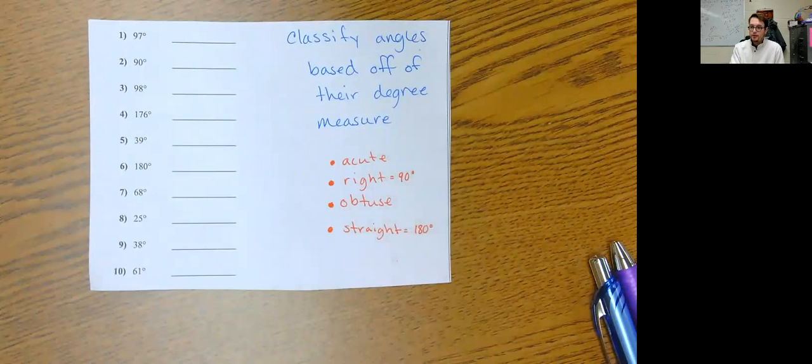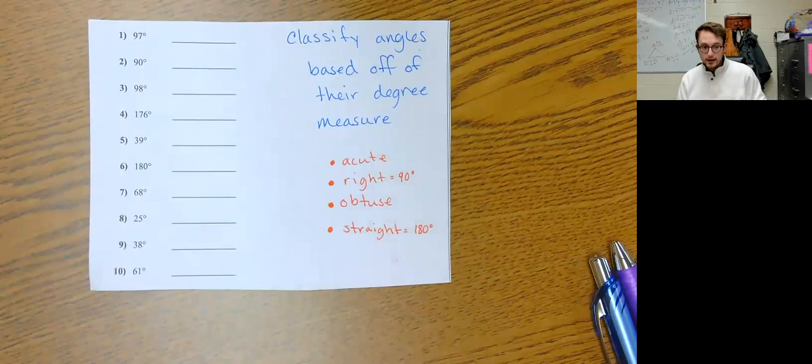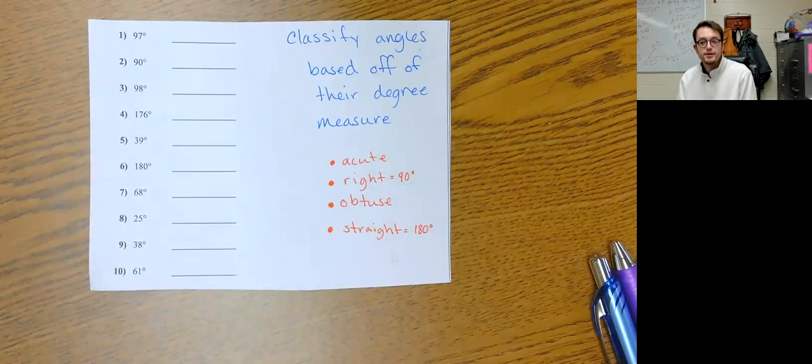right now, if you're watching this video, is maybe on a separate sheet of paper, write down 1, 2, 3, 4, 5, 6, 7, 8, 9, 10 and classify these 10 angles based on these. And then you can resume after you've done that and see if you got them right. So go ahead and pause right now.